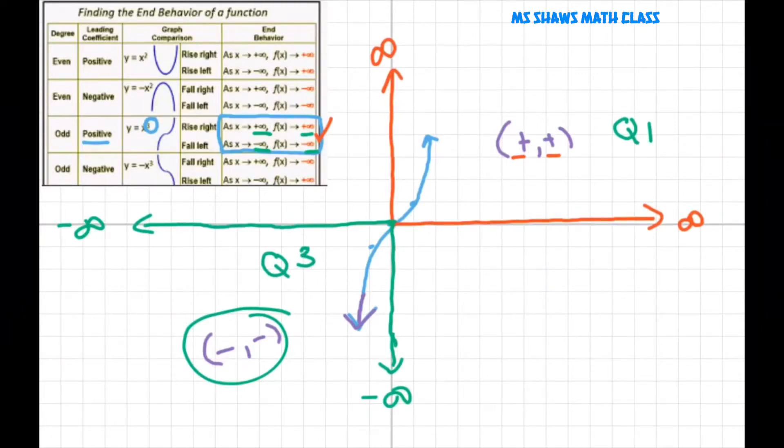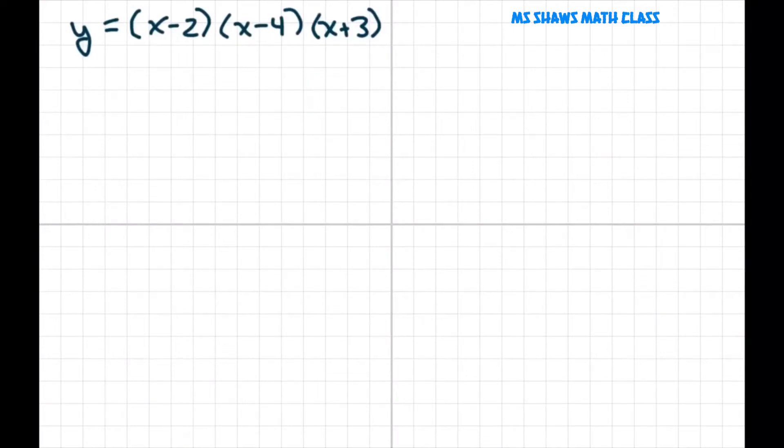All right. So let's graph this. Our y-intercept was 8 times 3, 24. And we're just sketching the graph, so I'm just going to put the 24 there. We had intercepts at 2 and 4 and negative 3.